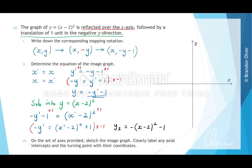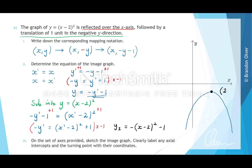For part 3, on the set of axes provided, we want to sketch the image graph and clearly label any axial intercepts and the turning point with their coordinates. The graph of y equals x minus 2 all squared used to be somewhere around here, but after being reflected over the x-axis and translated one unit in the negative y direction, we now have a graph that looks like this. The key features are the turning point at (2, negative 1) and the y-intercept at (0, negative 5). So that is the graph of y1.